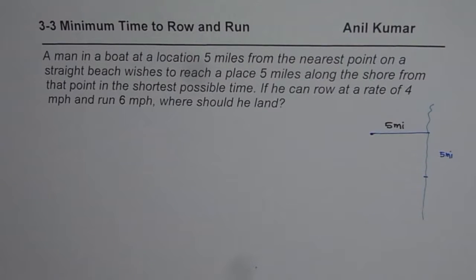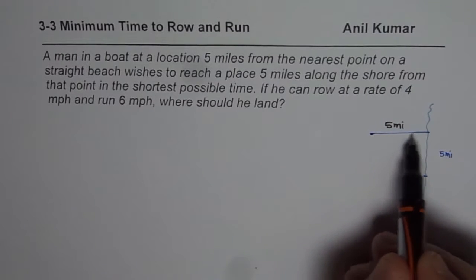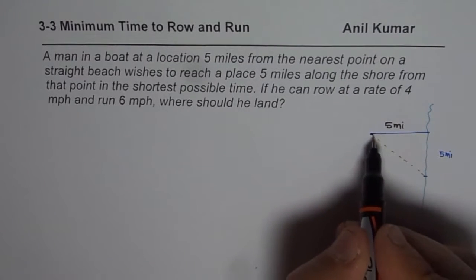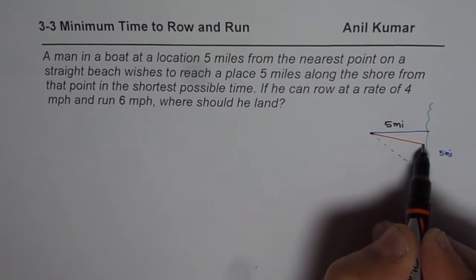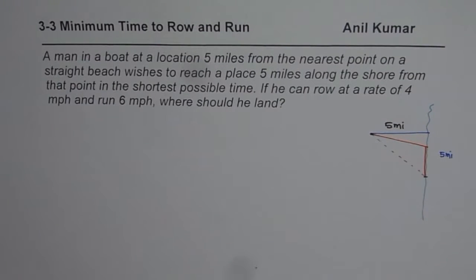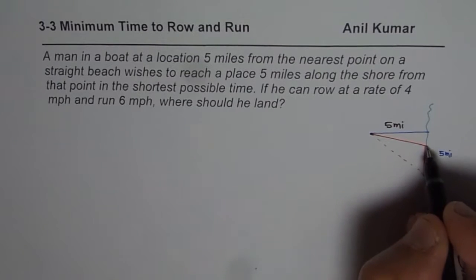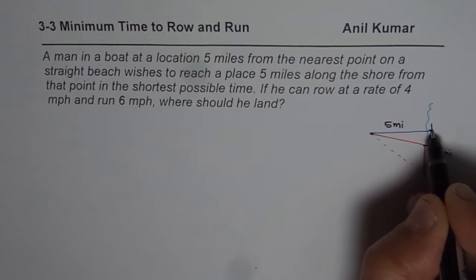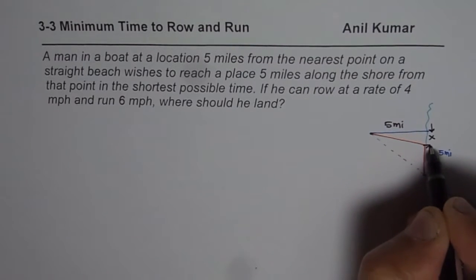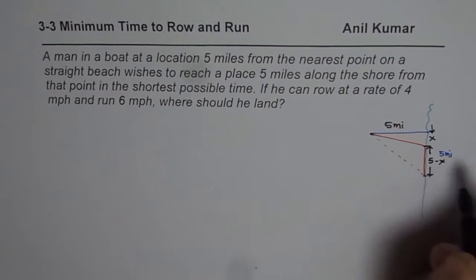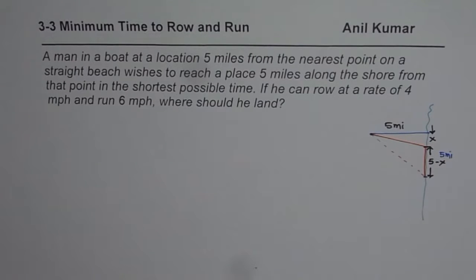Now, where should he land? The person can actually go straight and then run, or he could go diagonally straight to the endpoint, or it is possible he goes somewhere in between and then runs. Let us assume the option is going diagonally so that the person lands x distance away from that point. In that case, the distance to run will be 5 minus x.